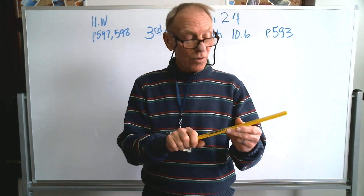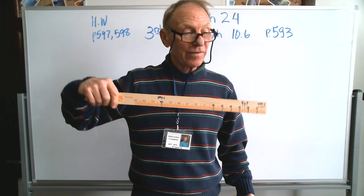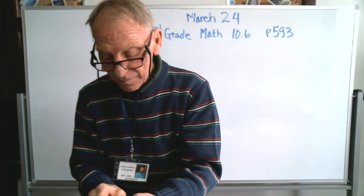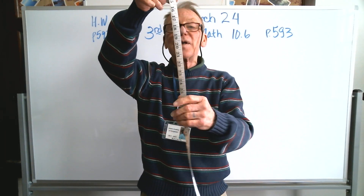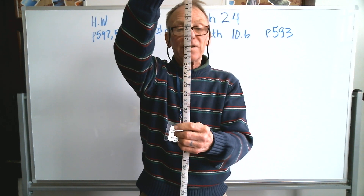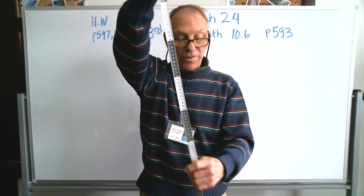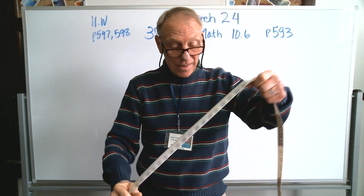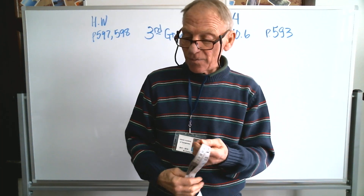We're all used to a ruler. Rulers come in a lot of different varieties and sizes. They even come in the form of tape measures. This is kind of cool because it's got standard measurement on one side, metric on the other. Metric is a lot easier, but for the sake of this lesson, we're just going to be using standard measurement.